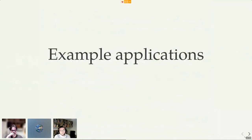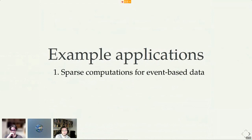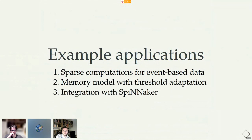So now that I've talked a bit about the theoretical or the idea behind Norse, I want to talk a bit about some applications. I want to bring to you three applications that I have to go through a bit fast because we have some time constraints. I want to talk a bit about sparse computations for event-based data, memory models that exist in the literature, and then finally how we can integrate this with neuromorphic hardware.